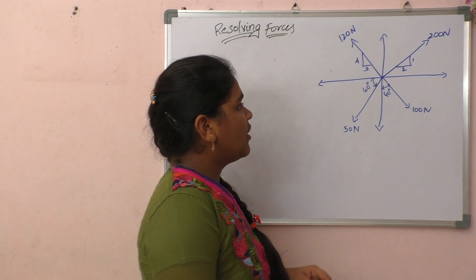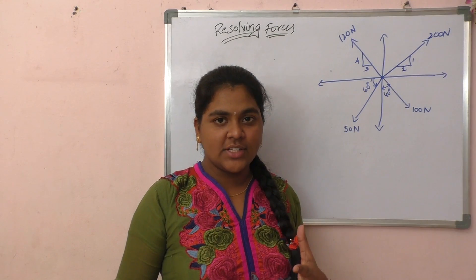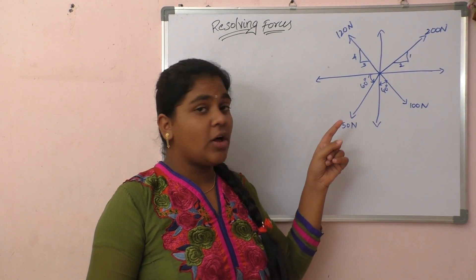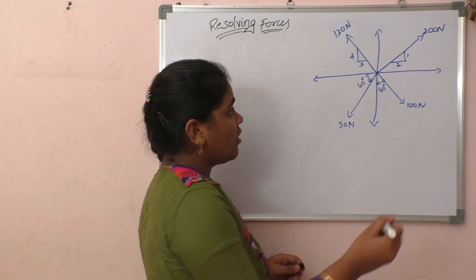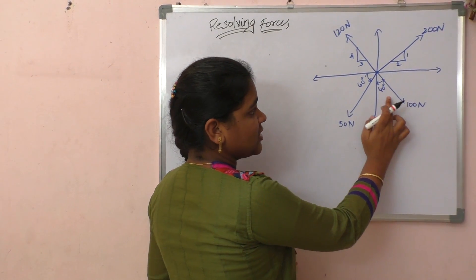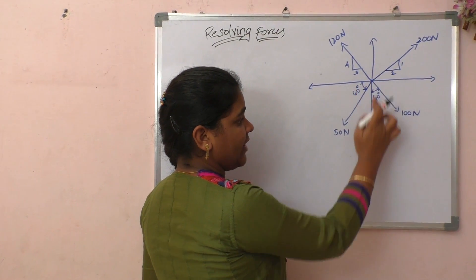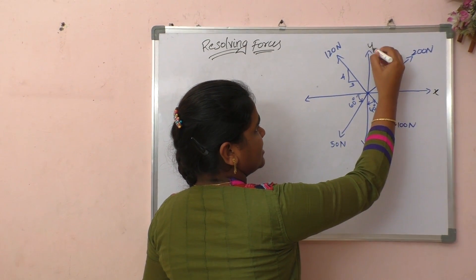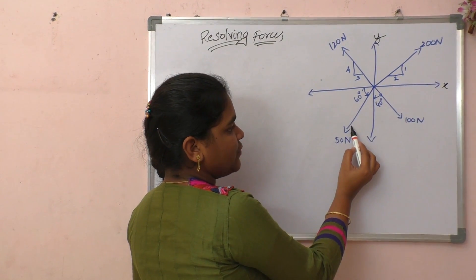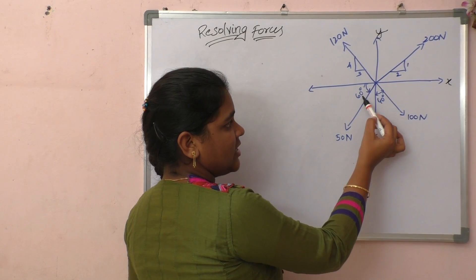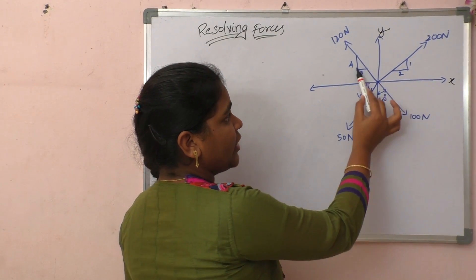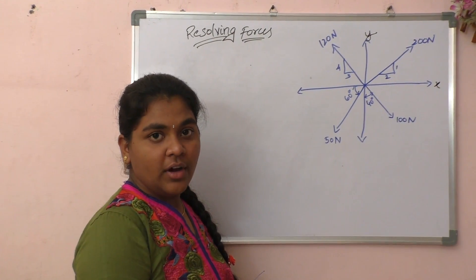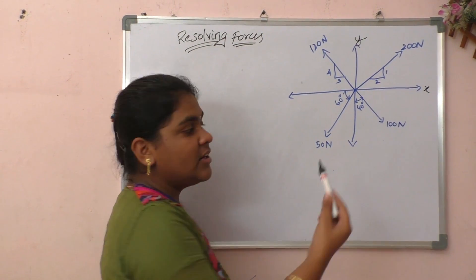To resolve forces, we need to know all the force values and all the angle values. For this force, there is an angle of 40 degrees with the y-axis. For this force, the angle is made with the x-axis at 60 degrees. There are two more forces whose angles are not given, so let us consider them as theta1 and theta2.